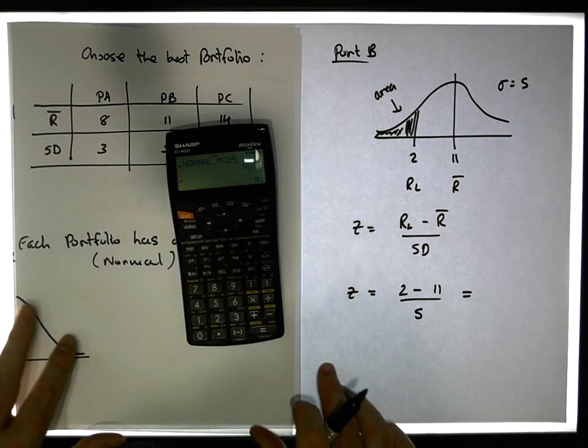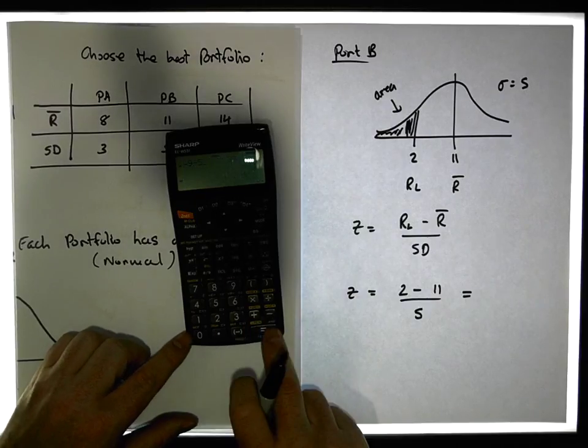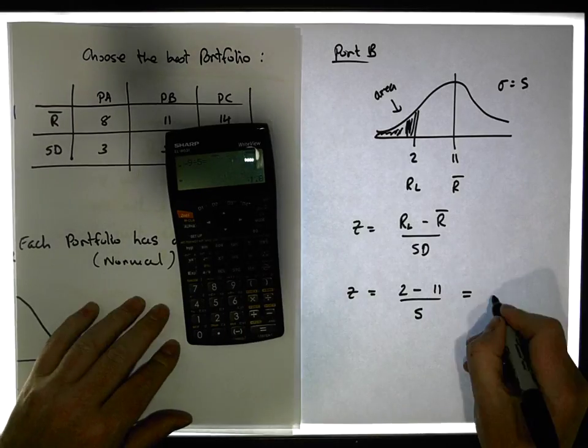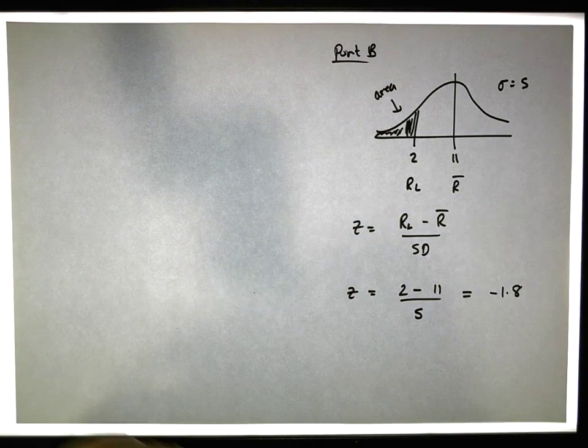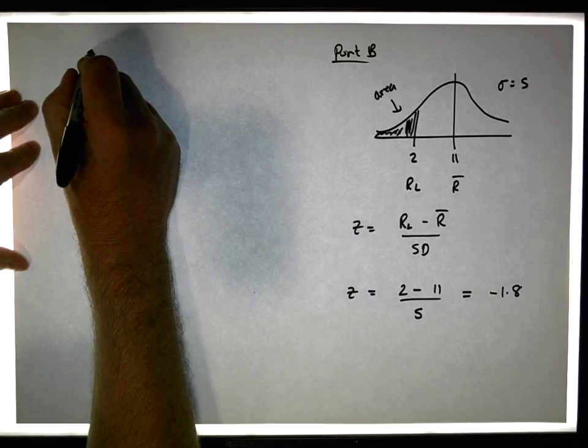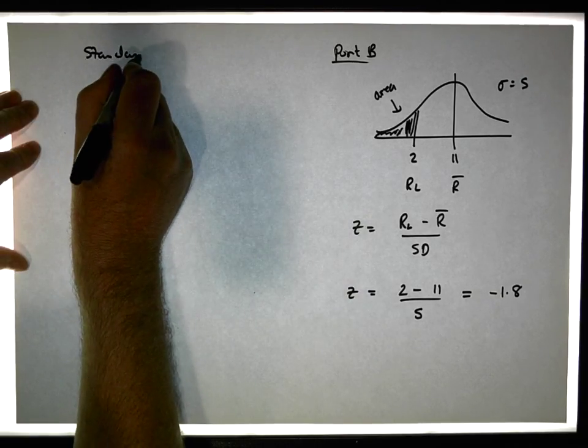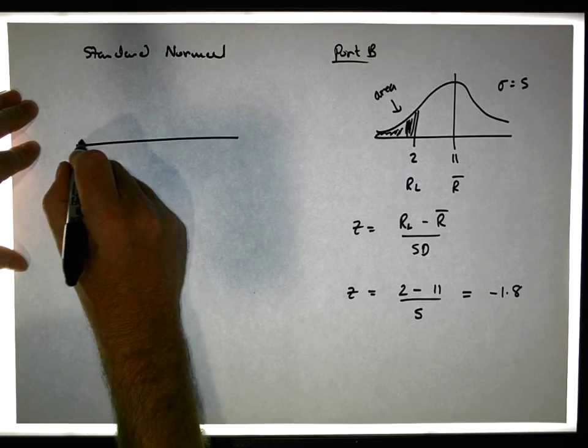2 minus 11 gives us minus 9, so it's minus 9 divided by 5, which gives us a value of minus 1.8. So from a standard normal perspective, now the question is that we have is, from a standard normal perspective...